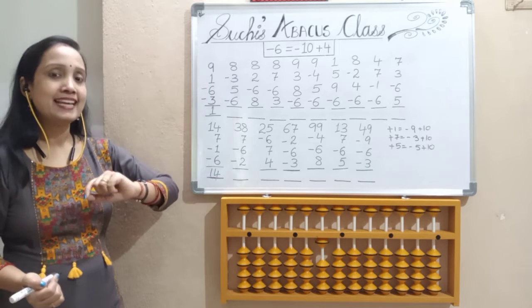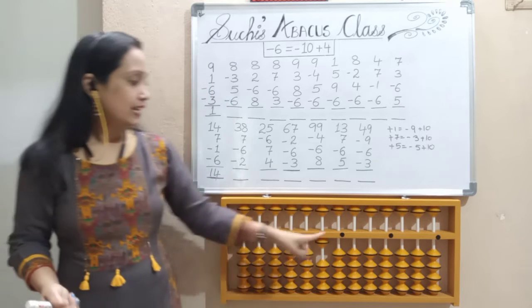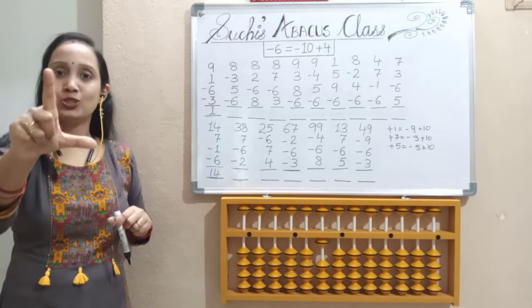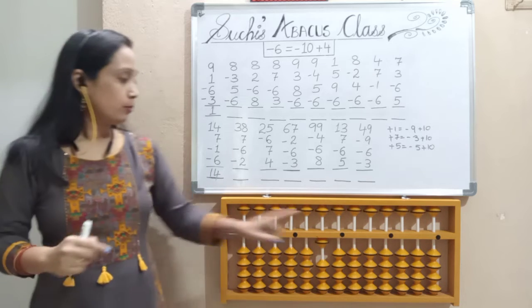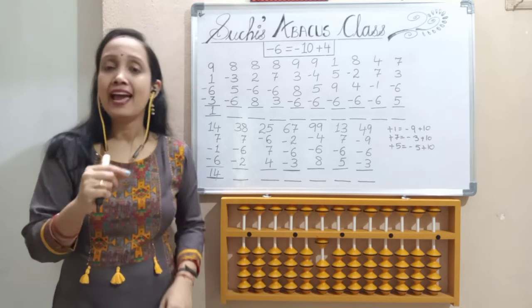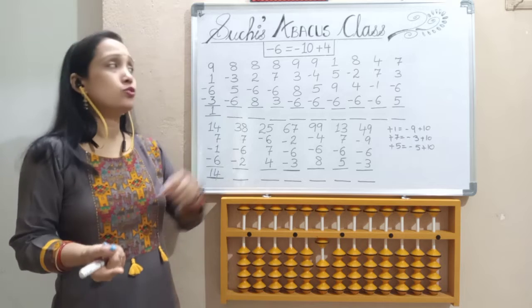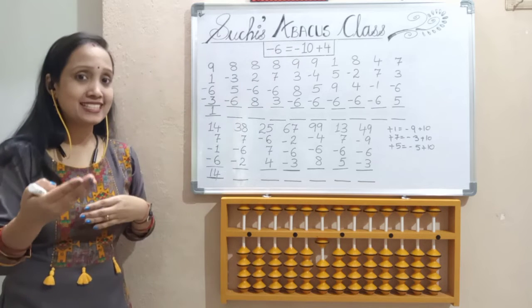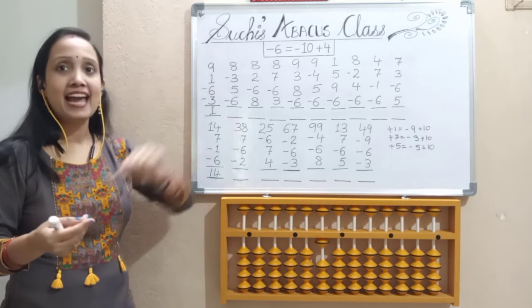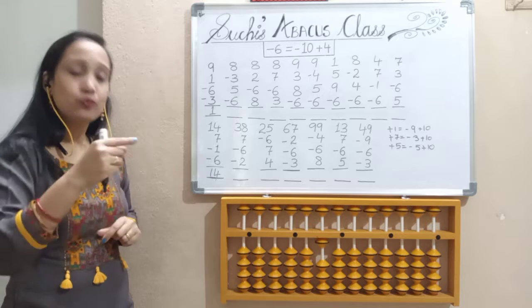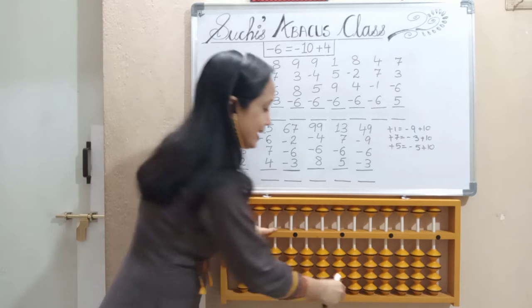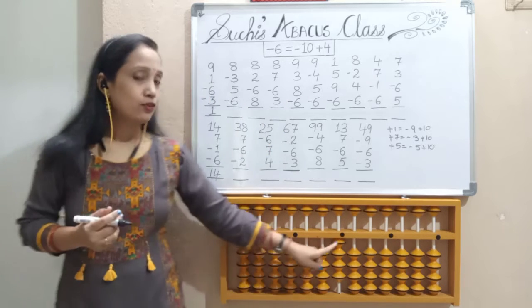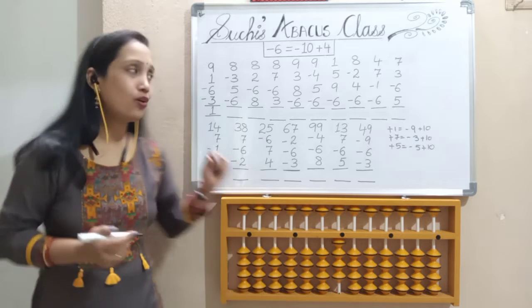Next, less 6. In 1's place, I need 5 and 1 to do pinch out, but I don't have 5 and 1 active. So I should go for formula — formula for less 6 is less 10 and 4. Less 10 and 4. So our answer is 1, 2, 3, 4.